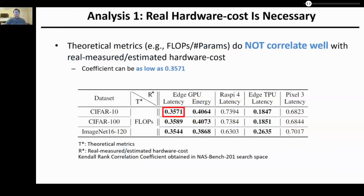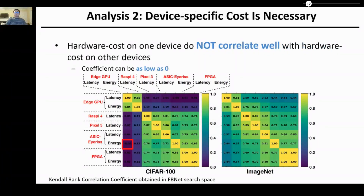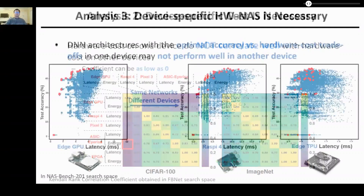Based on our developed HWNAS Bench, we performed some interesting analyses. The first shows that real hardware cost is necessary, because theoretical metrics like FLOPs and number of parameters do not correlate well with rail-measured or estimated hardware cost. Specifically, our experiments on the rank correlation coefficient of FLOPs versus real hardware cost suggest the coefficient can be as low as around 0.3. The second analysis indicates that device-specific cost is necessary, as hardware cost on one device does not correlate well with hardware cost on another device, with coefficients also as low as 0.3.